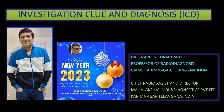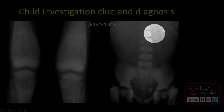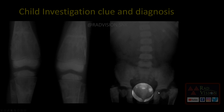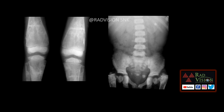We will try to see some cases, identify clues from the case, advise an investigation, and come to the diagnosis. Coming to the first case: this is a child. You can see renal calculi, vesicle calculi, pathological fractures, and altered bone density. We will try to see what causes calculi in a child and how we can come to a diagnosis based on investigation.